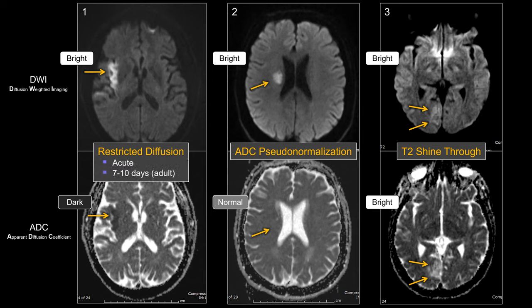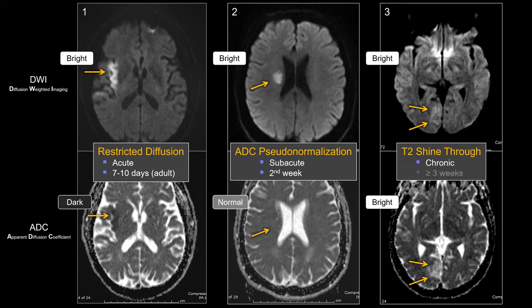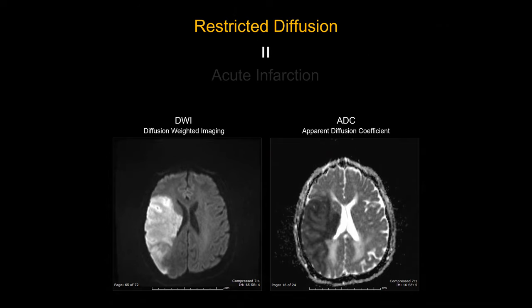Our clinical interpretation is that the first patient has acute infarction, anywhere from onset up to 10 days in adults. The second case is subacute infarction, usually occurring after the second week. The third patient has chronic infarction, typically occurring three weeks and beyond. So restricted diffusion equals acute infarction on imaging: bright on DWI, dark on ADC.